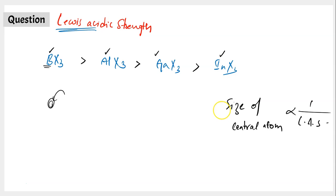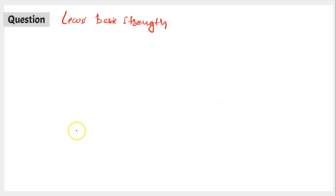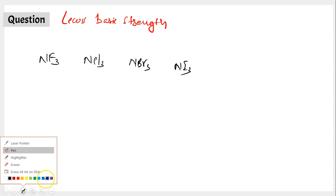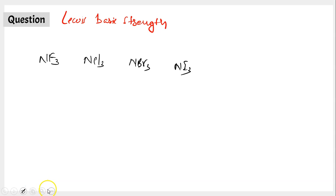In case of Lewis basic strength, the story is the opposite. Lewis base is a substance which has the capacity to donate a pair of electrons, and the species which can readily do that is a good Lewis base. Let us take examples: NF3, NCl3, NBr3, and NI3. Out of these four, which can act as the best Lewis base? The substance which can readily donate its lone pair of electrons is a good Lewis base. Give it a try and be ready with your answer.